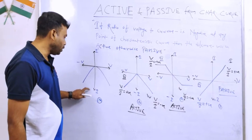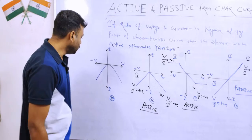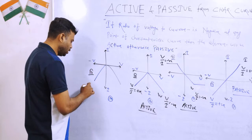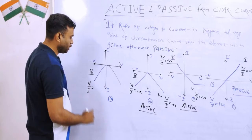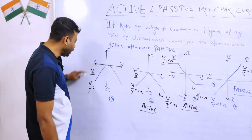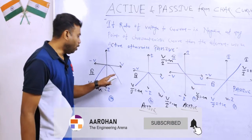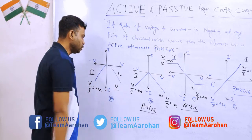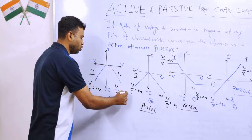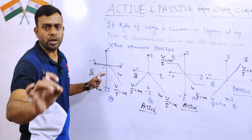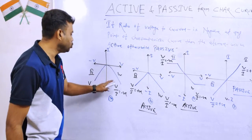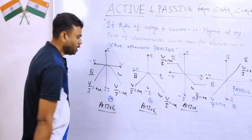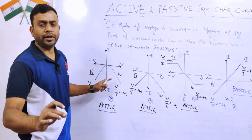Fourth curve देखते हैं। इसका first half part आ रहा है third quadrant में — जहाँ V negative और I negative है, तो V by I ratio positive होगा। लेकिन दूसरा portion आ रहा है fourth quadrant में — जहाँ voltage positive और current negative है, तो ratio negative हो जाएगा। इस curve के किसी point पर V by I ratio negative होता है — इसका मतलब यह curve drawn है for an active element. So this is a very good concept to identify active and passive from the given characteristic curve.